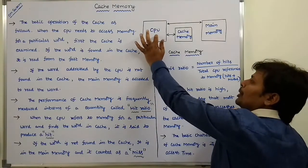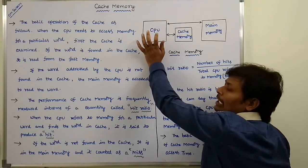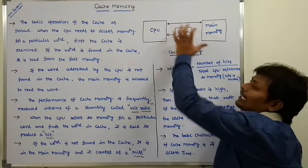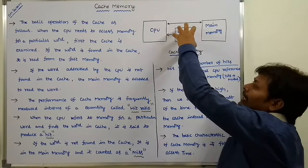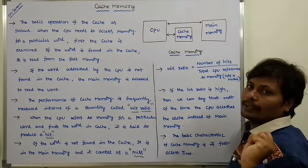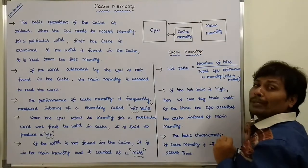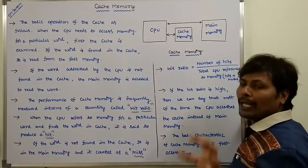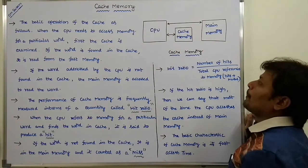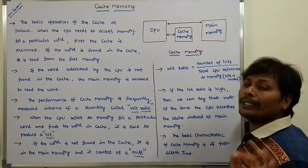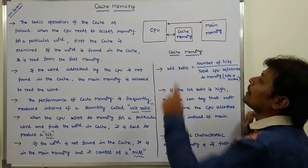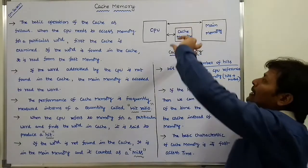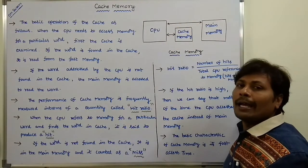Suppose the CPU wants to access a particular word from memory. First, it checks the cache memory to see if the word is present or not. If the word is present in the cache memory, the CPU reads that word from the cache memory. If the word is not found in the cache memory, then the CPU reads the word from the main memory.